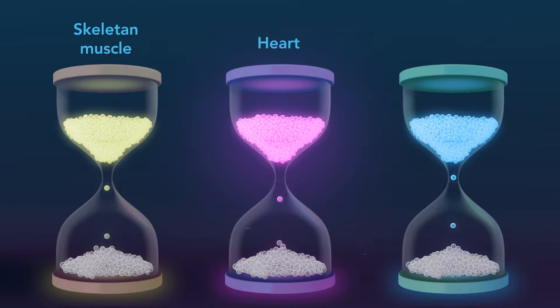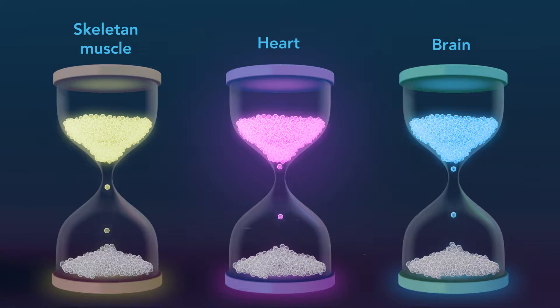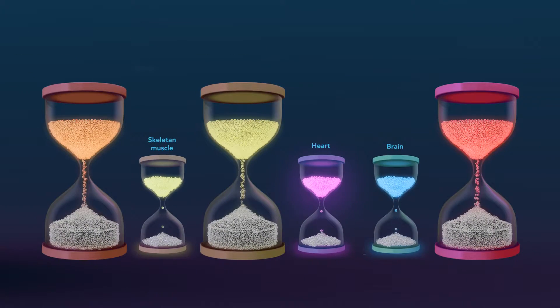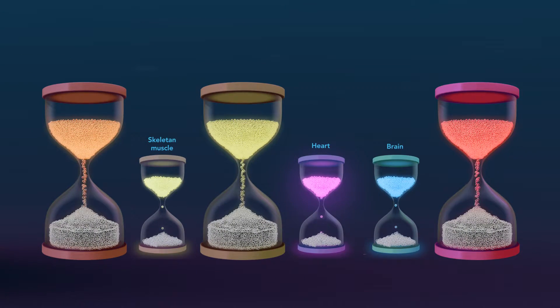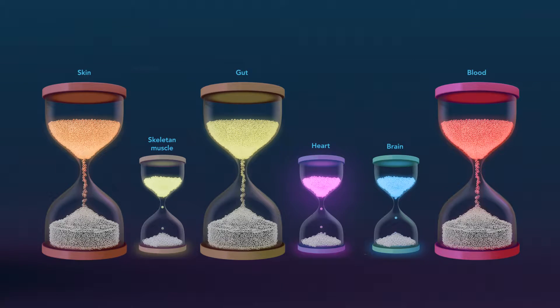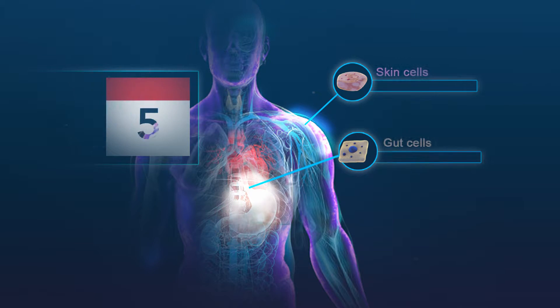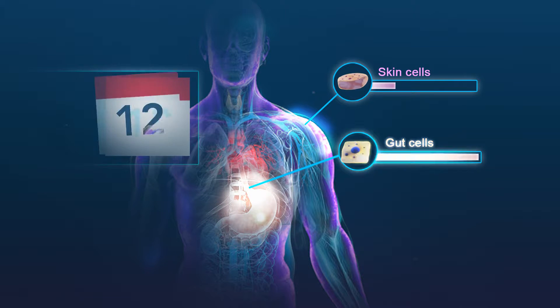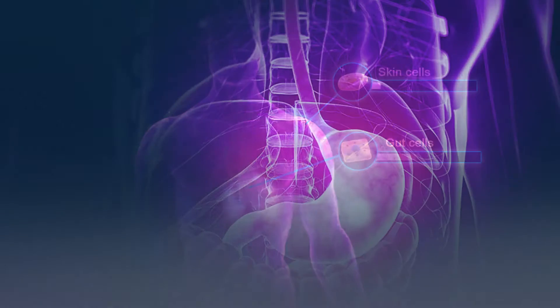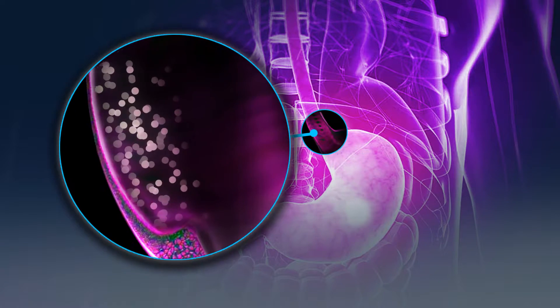In contrast, in other tissues the lifespan of cells is very short, such as skin, gut, and blood. In fact, every week the inner lining of your gut is renewed, and every month your skin is replaced completely. This is possible by tissue-specific stem cells which continuously replace cells that have become lost.